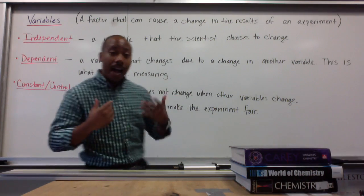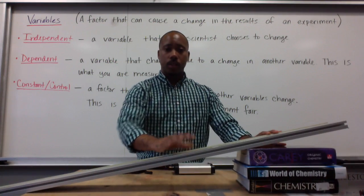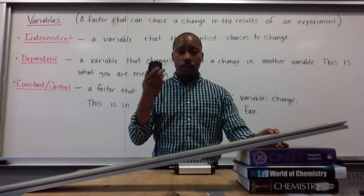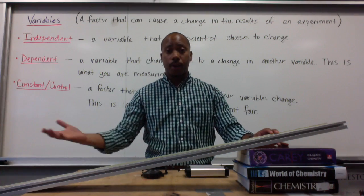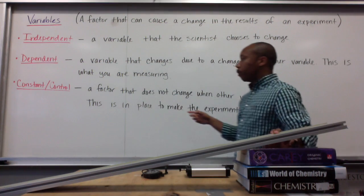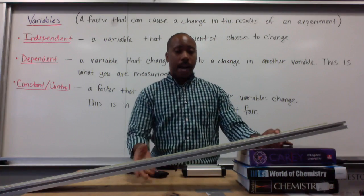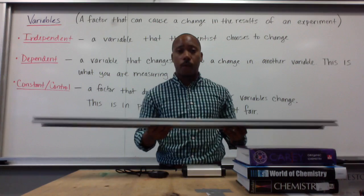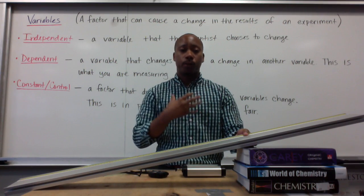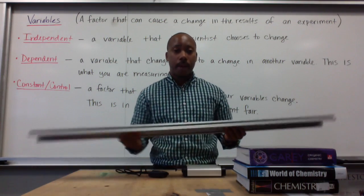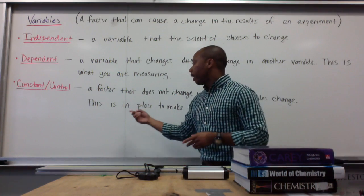My independent variable is what the scientist changed: I changed the height of the ramp, going from one to three books. My dependent variable is what I was measuring: the time it took the cart to go down the ramp — or you could say the speed of the cart down the ramp. My control variables are what I didn't change throughout the experiment: the same car, the same stopwatch, the same ramp, and the same books. The experimenter didn't change either — I did all three trials. Keeping all these things the same while changing my independent variable makes this experiment fair.